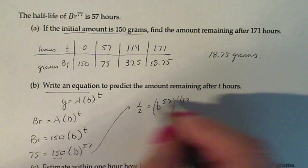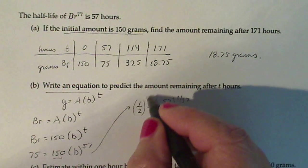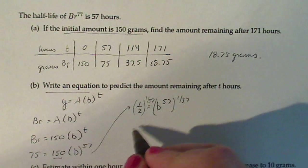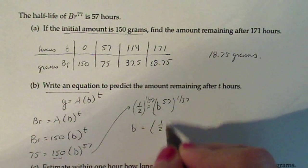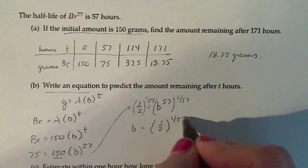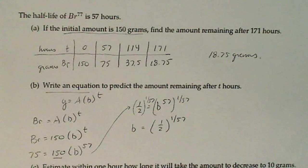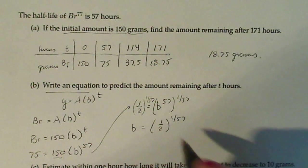And then I have B is exactly equal to one-half raised to the one over 57. Now a lot of times in class, I just have them approximate that with four decimals. But just for fun, I'm just going to leave it in its exact value.